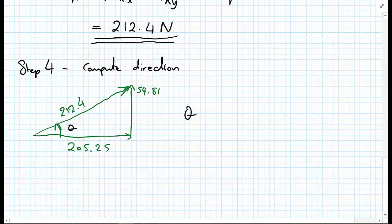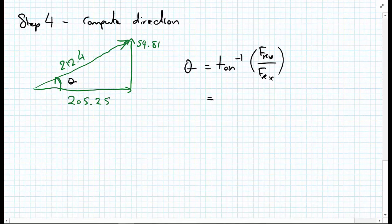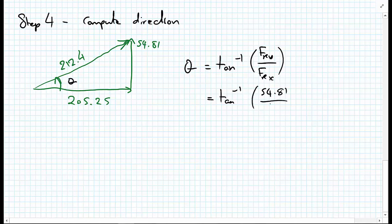Theta, let's call this angle theta here, is tan to the minus 1, sometimes written down as arctan, of FRy divided by FRx. So that's equal to tan to the minus 1 of 54.81 divided by 205.25, which equals 14.95 degrees.